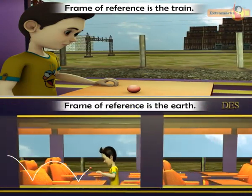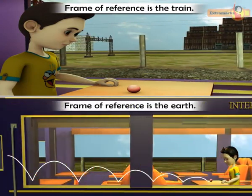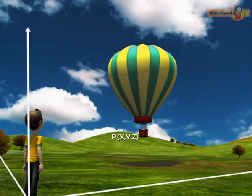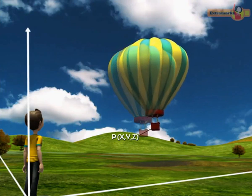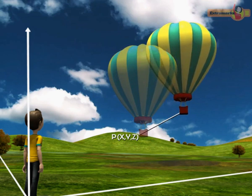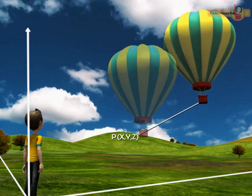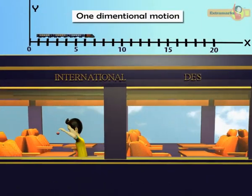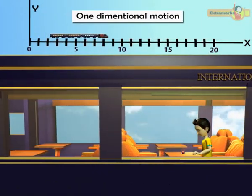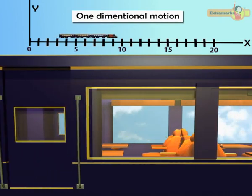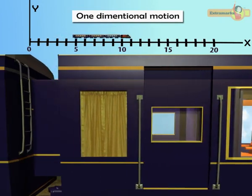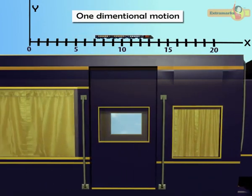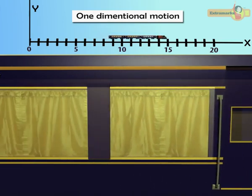When an object starts moving or comes into motion, one or more of its coordinates change with time. The motion in which one out of three coordinates changes with time is called one-dimensional motion. In one-dimensional motion, objects move in a straight path; therefore, this type of motion is called rectilinear or linear motion.